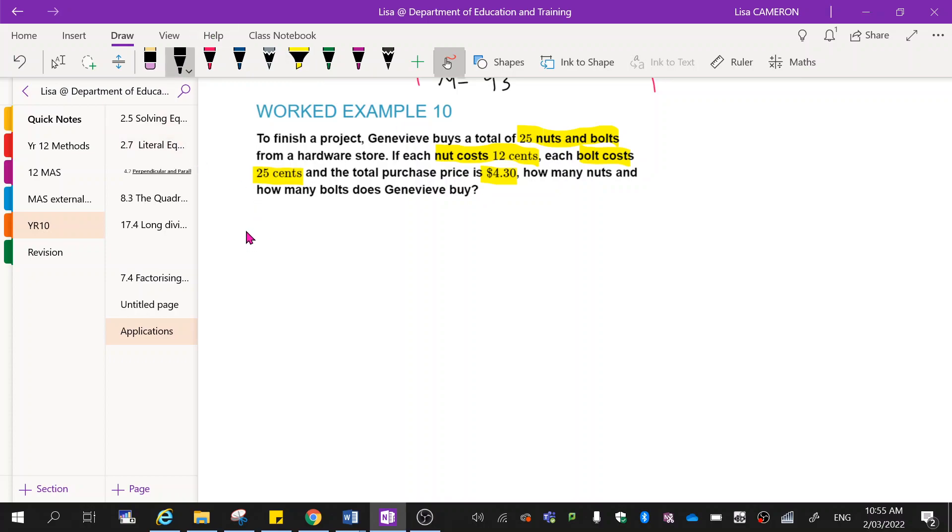Okay, so all I need to do for this one is I'm going to start setting out my information. So they buy a total of 25 nuts and bolts. So the first equation is going to represent the number of each purchased. So I'm going to buy n number of nuts plus b number of bolts. And that gives me 25 different items.